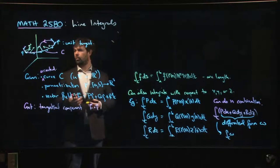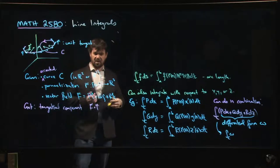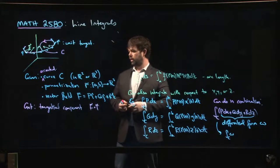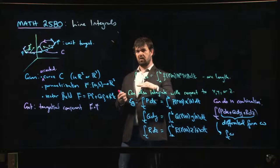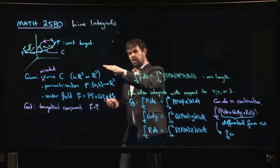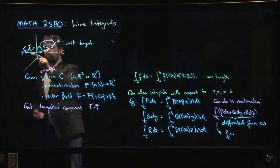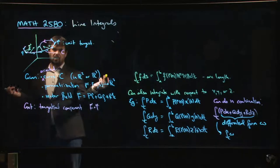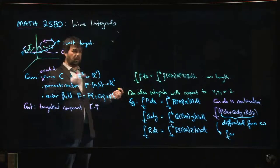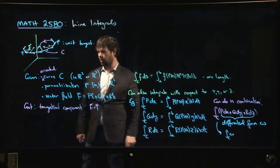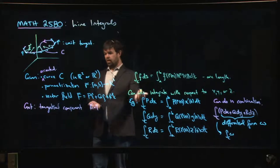You can do problems where if somebody draws the vector field and draws a curve in that vector field, you can get a rough idea of the value of the line integral just by looking and seeing: at most points, is the vector field pointing in the same direction as the curve, pointing opposite, or pointing perpendicular? If the vector field is normal to the curve at every single point, the integral is going to be zero. If it's tangent to the curve at every point, you'll get something nonzero.